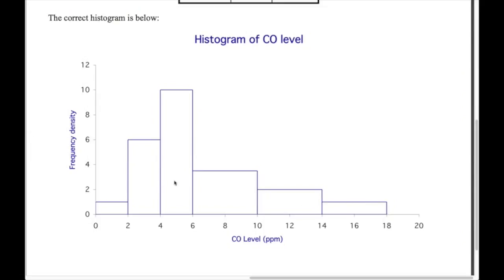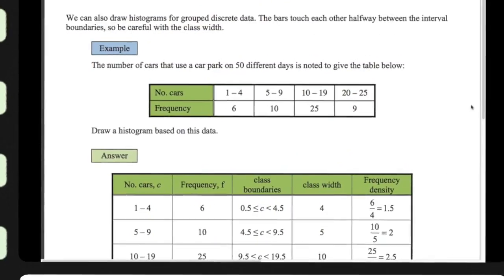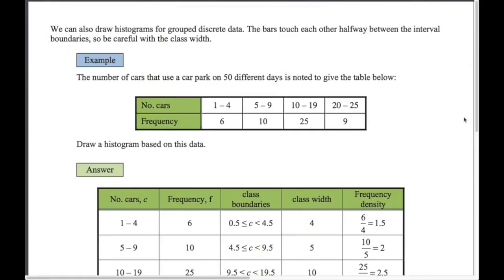Now the same idea but with grouped discrete data — the class boundaries are a little interesting here. We've got the number of cars using a car park on 50 different days, so on 25 of the days there were between 10 and 19 cars using the car park.